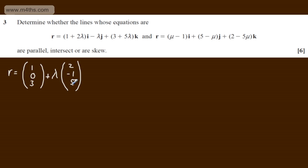5. If we now look at the second line, we have the position vector minus 1, 5, 2 plus some multiple, using the scalar parameter mu. We're going to have 1, minus 1, and minus 5.